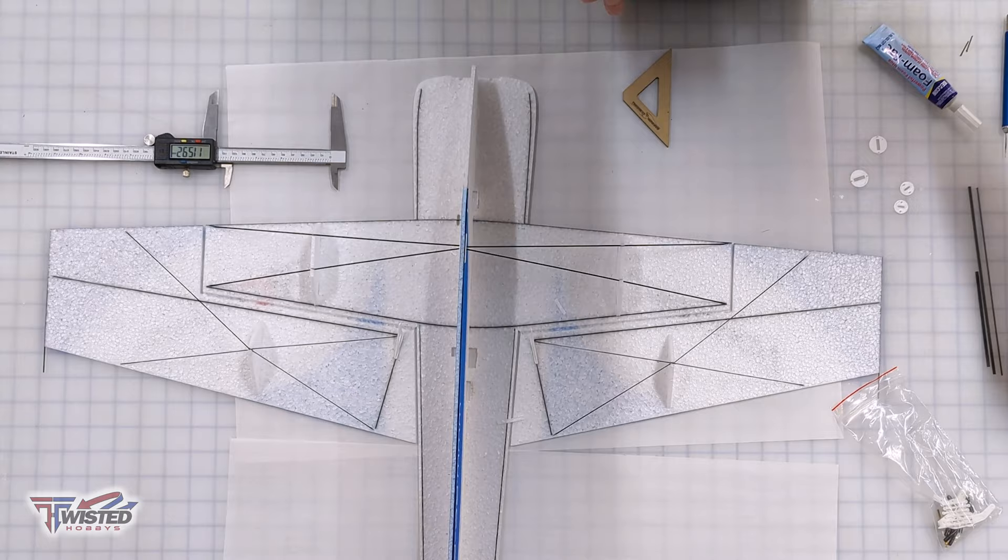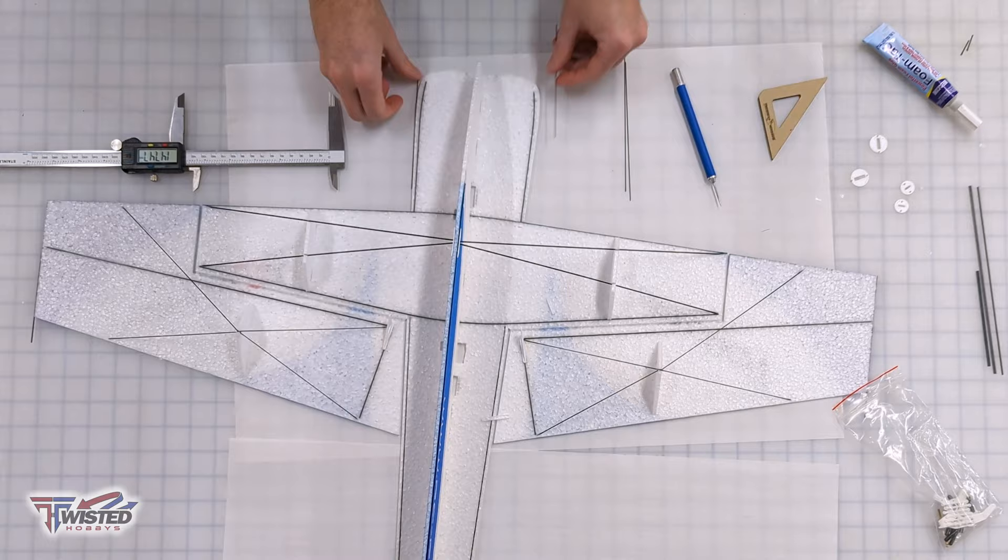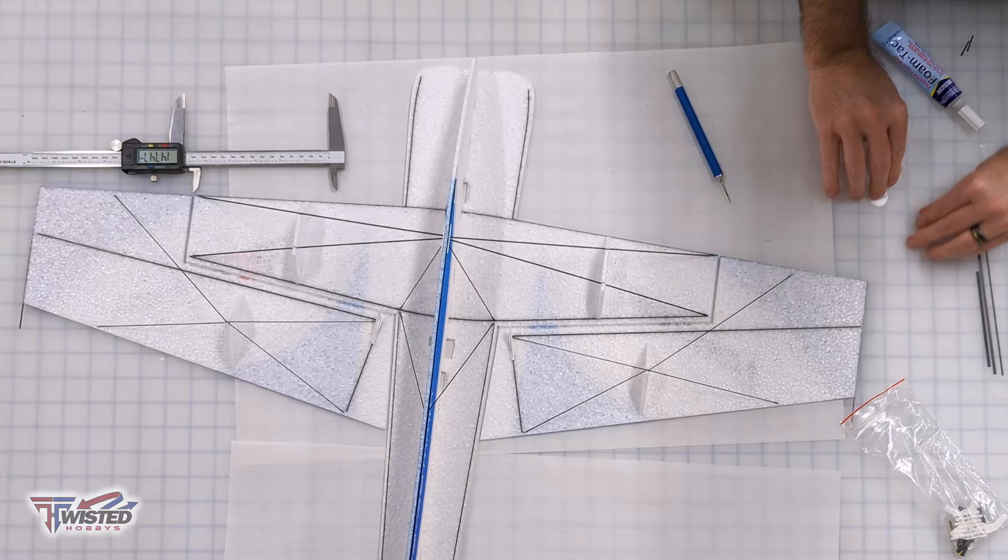Now that those are all done, the next thing that we're going to be doing is the bracing that goes down the fuselage. And these first two here go into the little white piece that the wing struts went into. You'll see here that I'm just dabbing it in some foam tack and putting it into place after I dry fit.